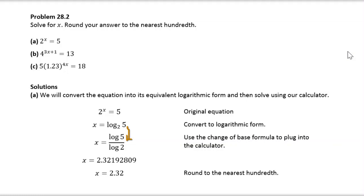So just change to natural log: log 5 over log 2, so that we can plug it into the calculator and evaluate its value.